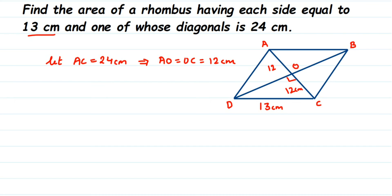Now we need to find the area of the rhombus. The formula for the area of a rhombus is: half times the product of the diagonals. Here the diagonals are AC and DB, so the formula is: Area = (1/2) × AC × DB. We know AC = 24, but we need to find the length of DB.